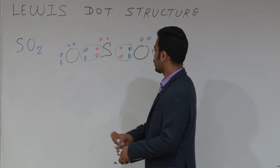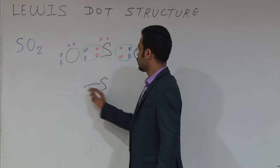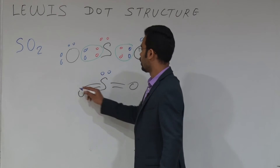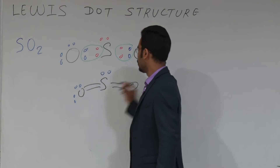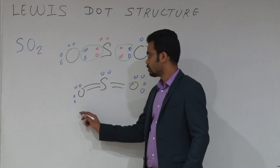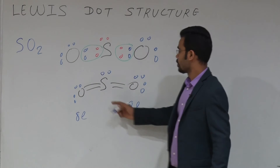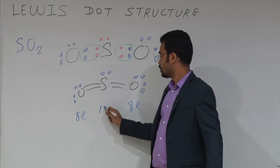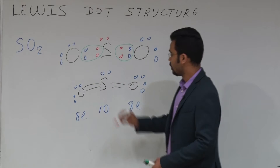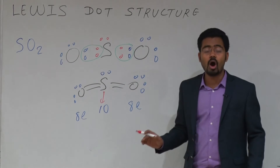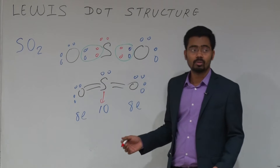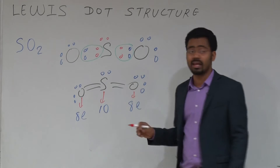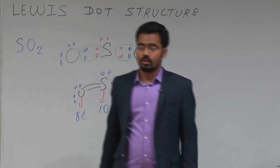The structure will be like SO—S—O, and sulphur has 1 lone pair and oxygen has 2 lone pairs. Sulphur has 10 electrons total, and since it belongs to the 3rd period, octet expansion occurs, so more than 8 electrons is stable here. But for oxygen, more than 8 electrons is not possible — oxygen must have exactly 8 electrons.